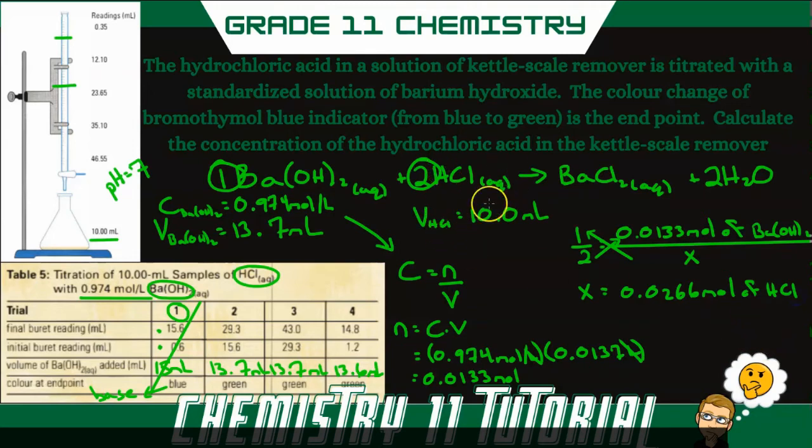Finally, now that we know the number of moles of hydrochloric acid, and we know the volume of hydrochloric acid, we can go back and use our concentration equation, our C equals N over V, to figure out the concentration of that hydrochloric acid. So N is 0.0266 moles, and our volume, again, converted into liters. So that would be 0.01 liters. And we get a concentration of hydrochloric acid to be 2.66 moles per liter.